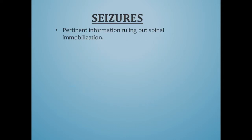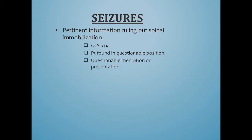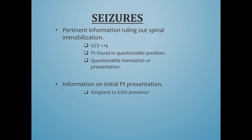We'll start with seizures. One of the things we found was there was no pertinent information ruling out spinal immobilization. You may have found somebody with a GCS of less than 14, a patient found in a questionable position, questionable mentation or presentation. A lot of you didn't explain why you didn't choose C-spine or why you didn't give a certain type of patient care. These are all important things to put in your documentation to help us get a better understanding of why you chose or withheld a specific treatment.